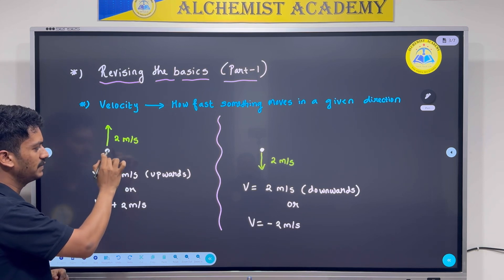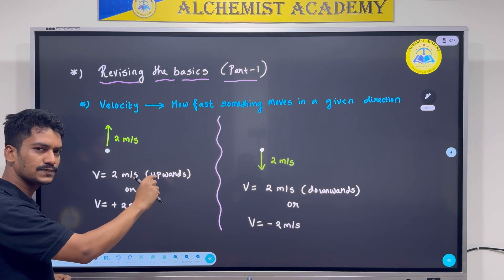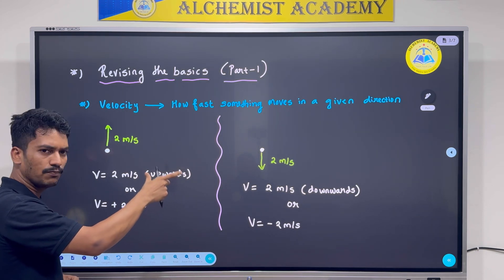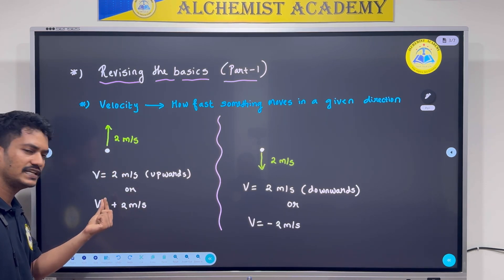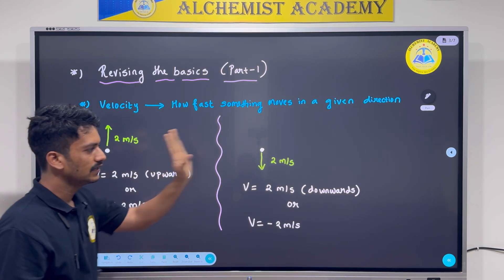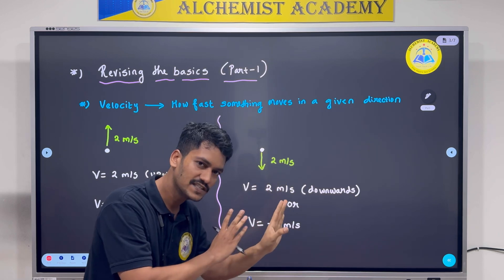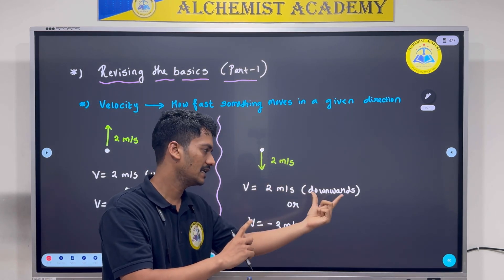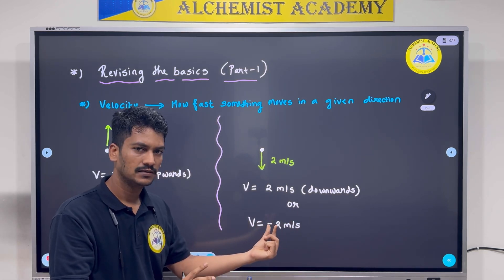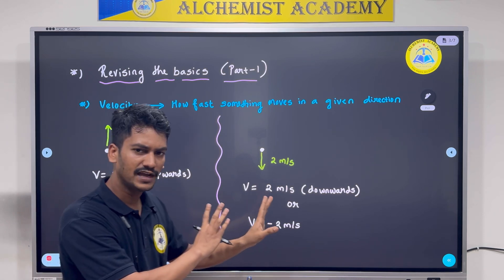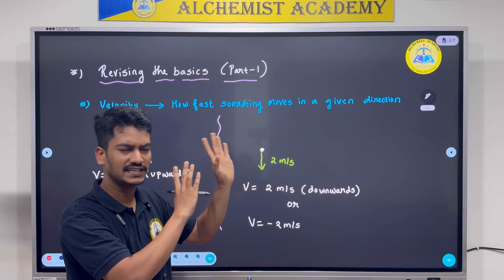I have an object moving with a speed of 2 meters per second in the upward direction, so its velocity is +2 m/s — the plus sign means the object is moving upwards. For an object coming down with a speed of 2 meters per second, I can specify its velocity as −2 m/s, because I chose plus for upwards, so I must choose minus for downwards. That's velocity: speed with direction.